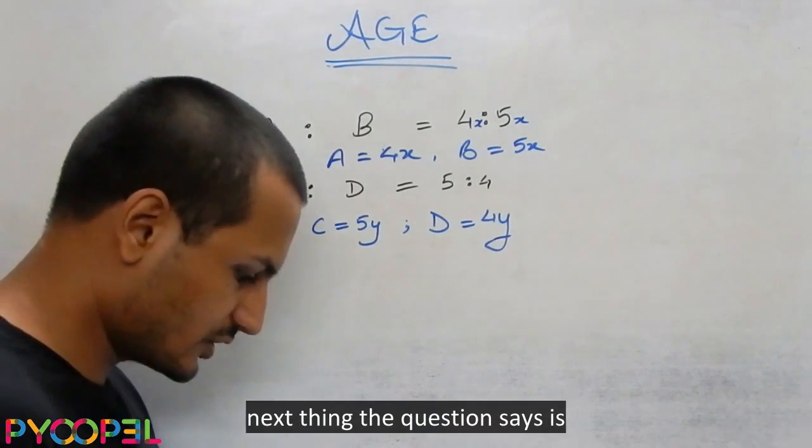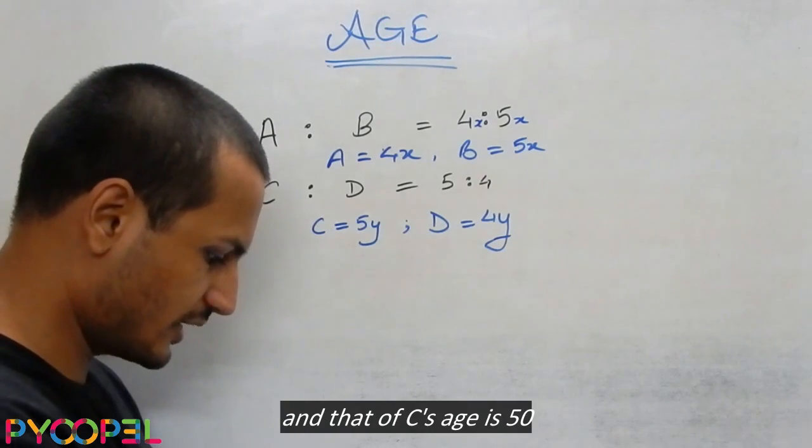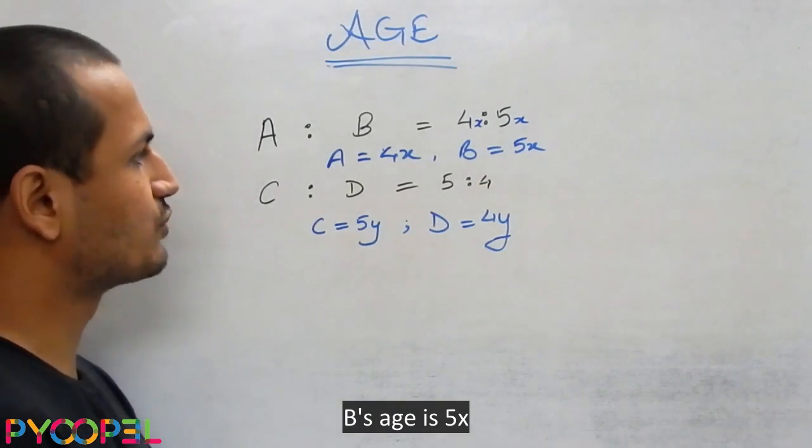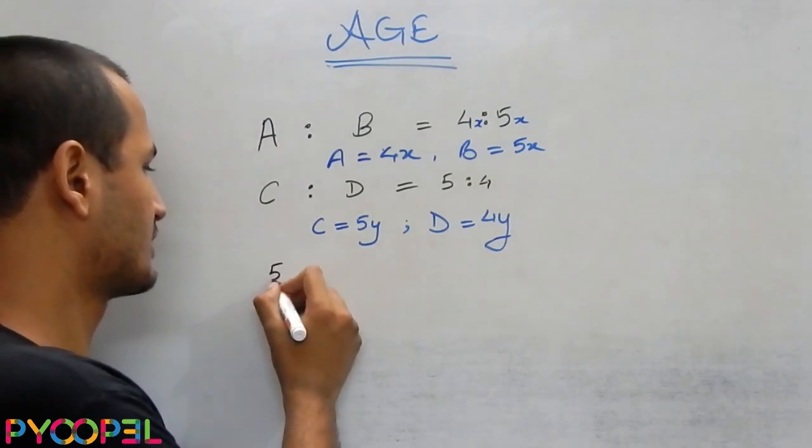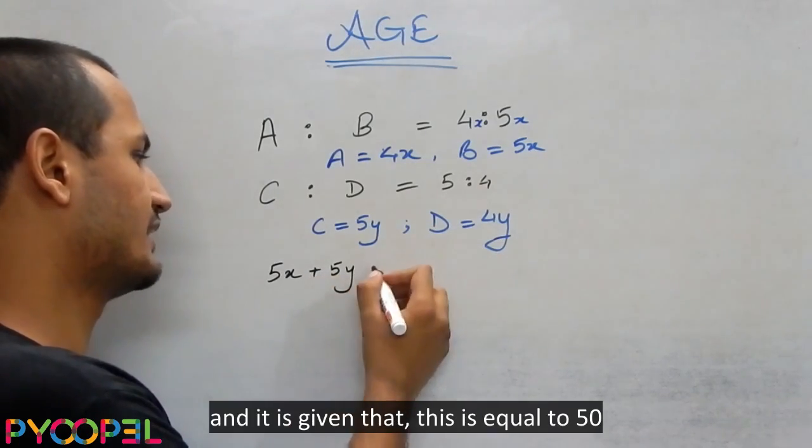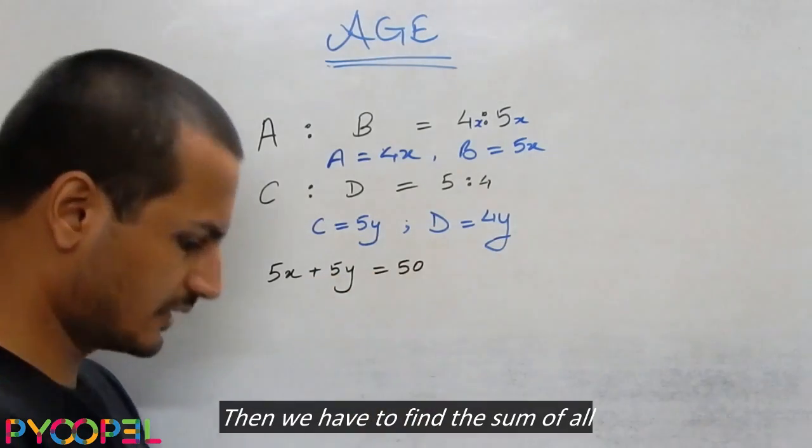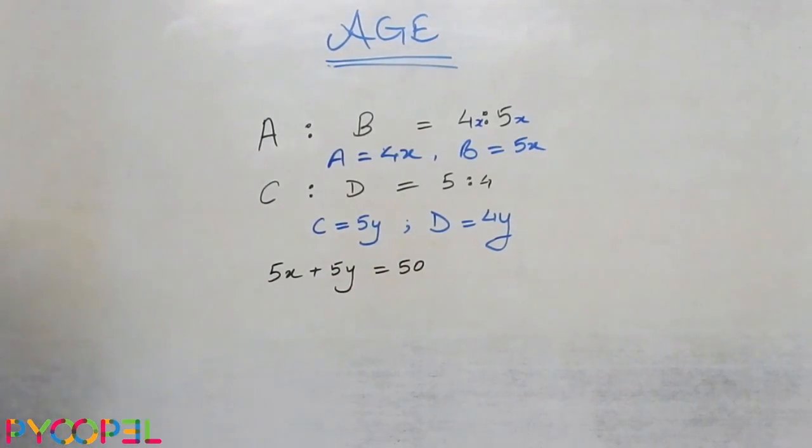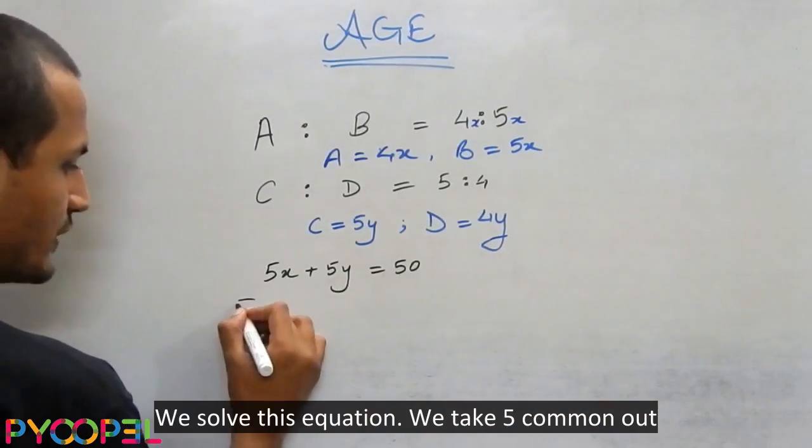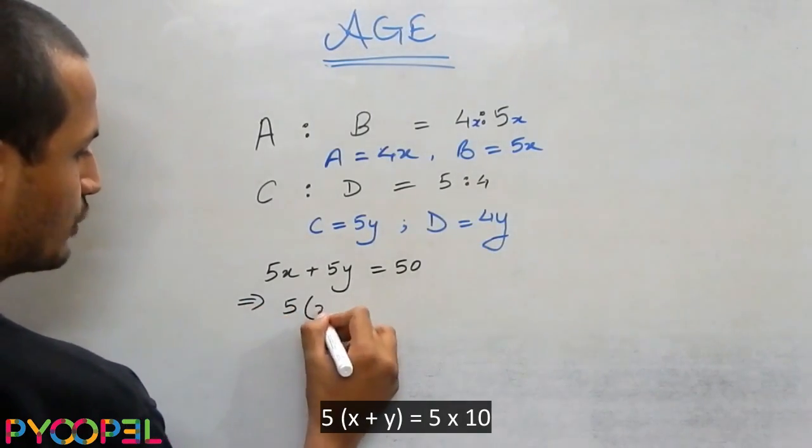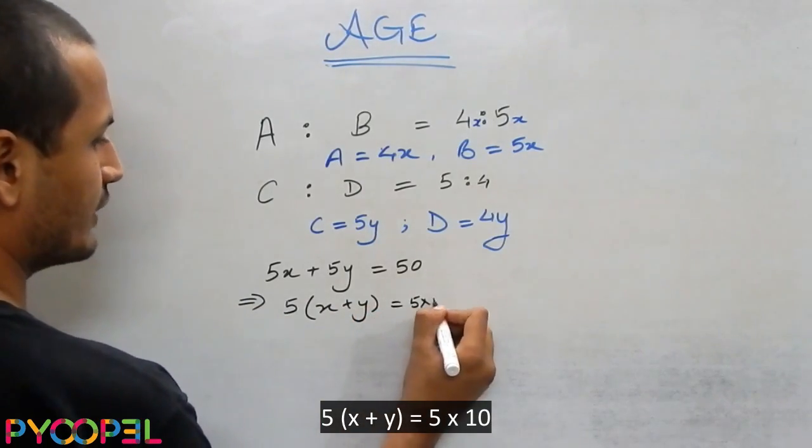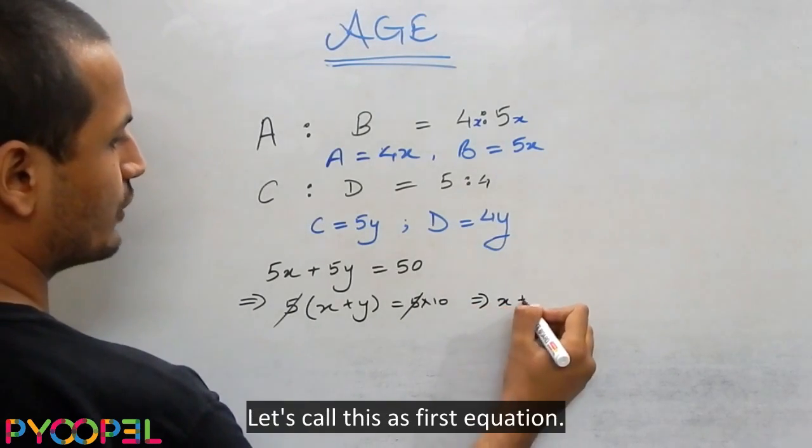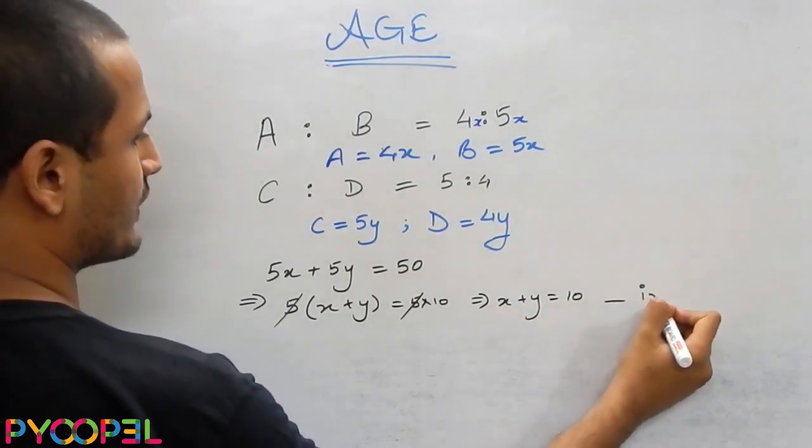So now the next thing the question says is if the sum of B's age and that of C's age is 50. B's age is 5x, C's age is 5y, and it is given that this is equal to 50. We solve this equation. We take 5 common out, x plus y is equal to 50 over 5, which is 10. So x plus y is equal to 10. Let's call this as the first equation.